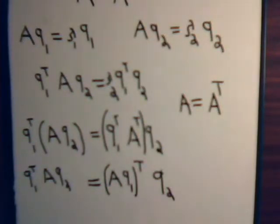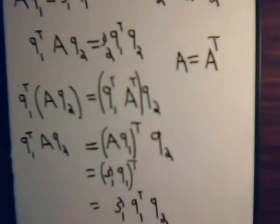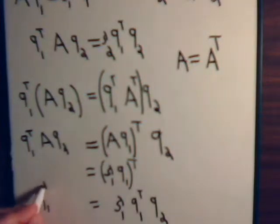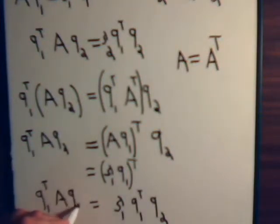Well, let's just back up a step here. Here we have AQ1 transpose, but A times Q1 is also just lambda 1 Q1 transpose. Of course, this is just a number, so this is just lambda 1 Q1 transpose times Q2. And what does that equal? It equals Q1 transpose AQ2.